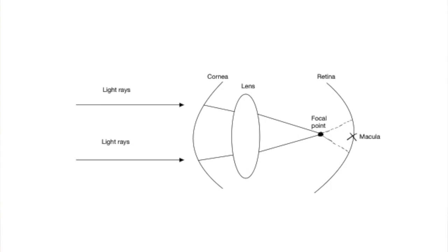In cases of myopia or nearsightedness, light comes to what we call a focal point — this is when all the light rays converge to a single point just before reaching the retina. So if you're looking at a teddy bear, watching TV, or looking at something far away, it comes to a stopping point there. As the light rays continue past that point, the image becomes very large and blurry when it lands on the retina, near the macula — your best center of vision, like your HD TV channel.